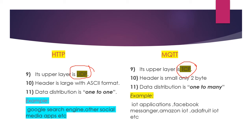The tenth difference is header format. The header format for HTTP is ASCII and is large, whereas for MQTT the header format is hexadecimal and is only two bytes, as mentioned earlier.